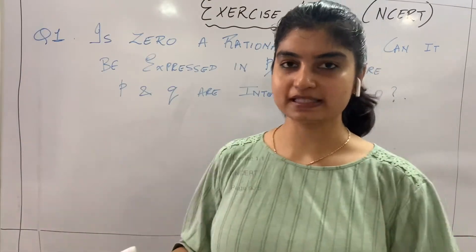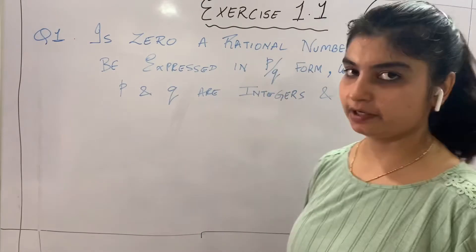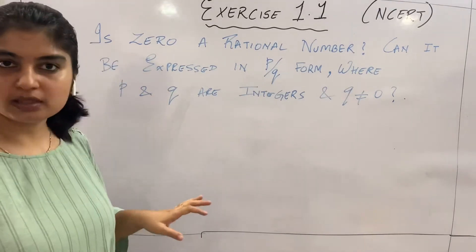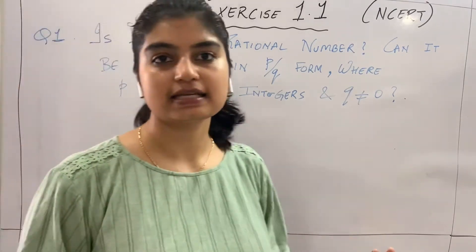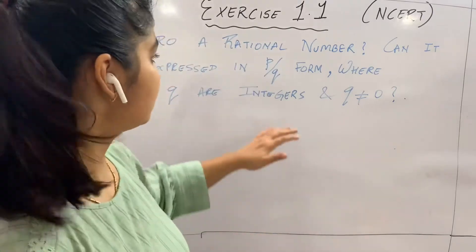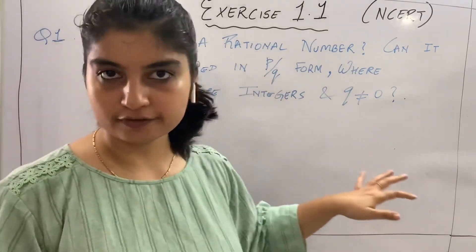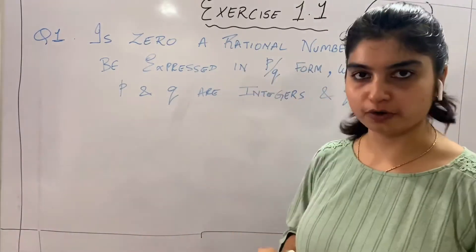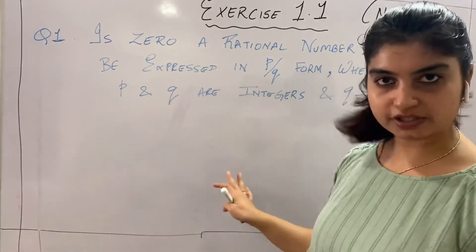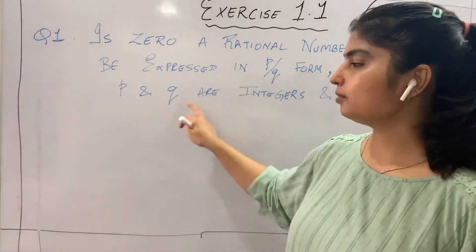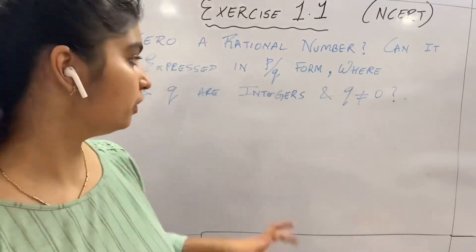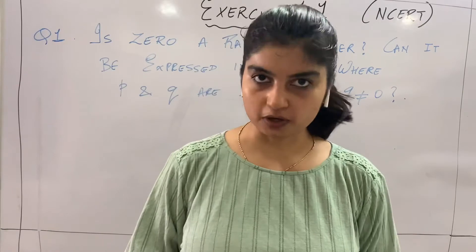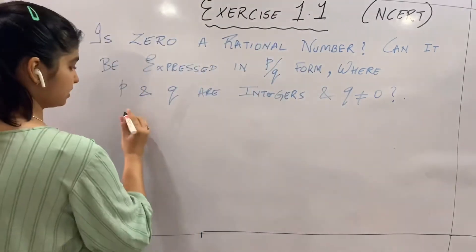Starting with exercise 1.1, question one: Is zero a rational number? Can it be expressed in p by q form? The definition of a rational number states that any number that can be expressed in p by q form, where p and q are integers and q is not equal to zero. So the question is: can zero be expressed in this form?